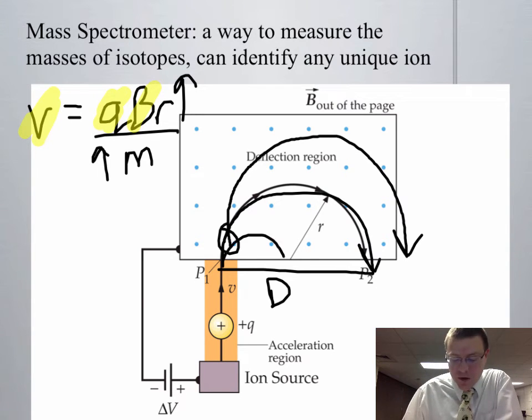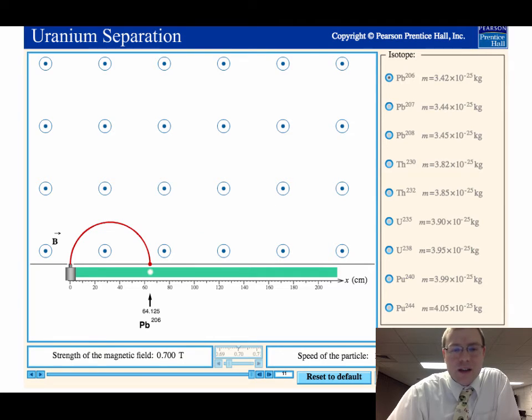Lighter masses will make small arcs, and heavy masses will make big arcs. So you can see if I fire lead into the mass spectrometer here, I get 64 centimeters of distance that it got deflected. Remember, that is the diameter, not the radius. If I reset this and fire a heavier isotope of lead, you can see my radius increases ever so slightly.